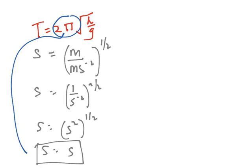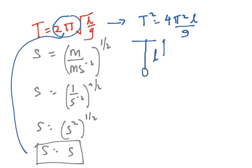One of the ways to validate the constant is to do a simple experiment. First, we change this equation to a linear form: t² = (4π²/g) × l. Then we take a pendulum of length L and oscillate it.